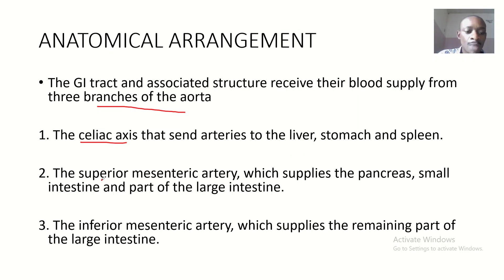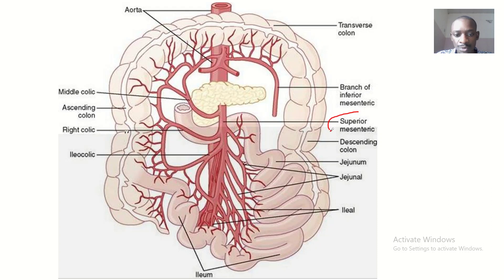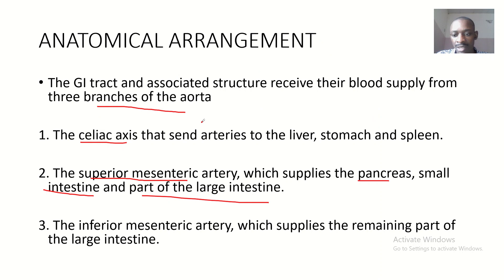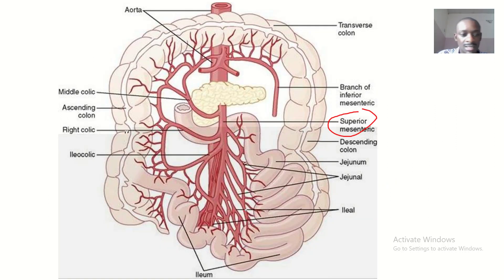The superior mesenteric artery supplies the pancreas, the small intestine, and part of the large intestine — it supplies the whole of the small intestine. The inferior mesenteric artery supplies the remaining part of the large intestine.